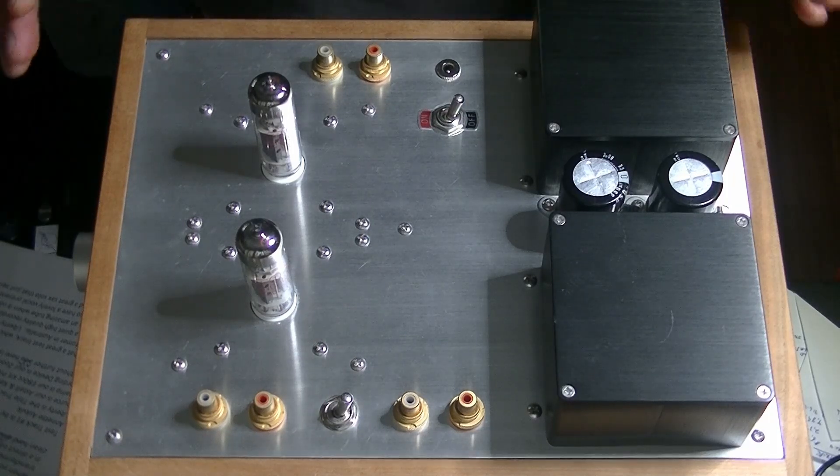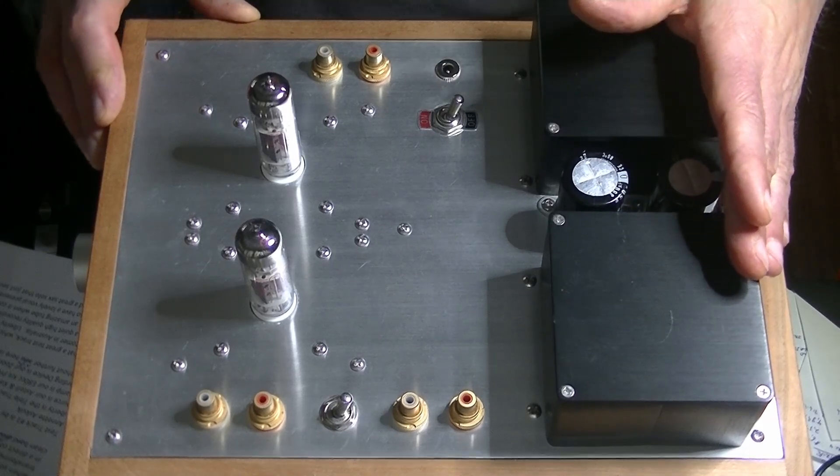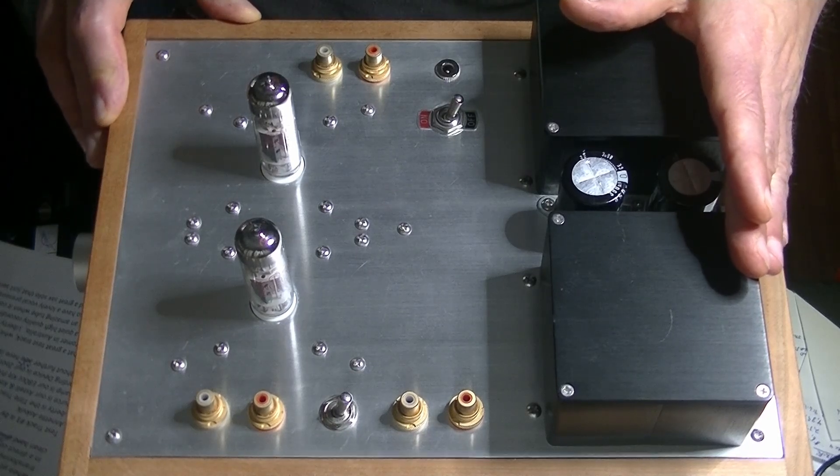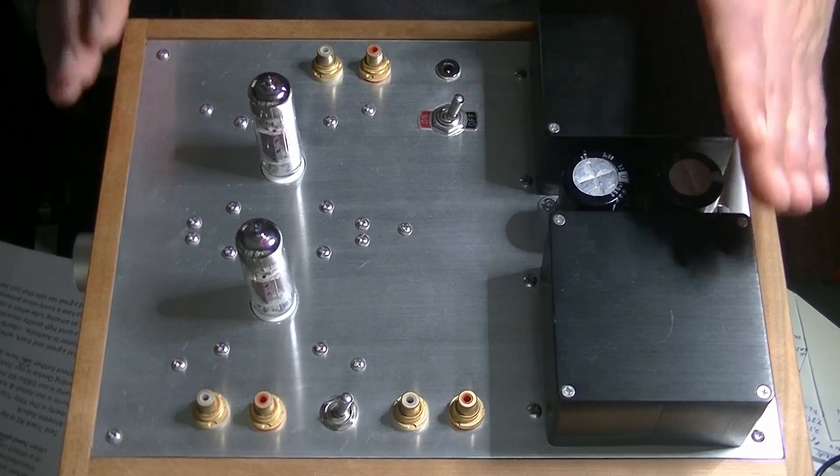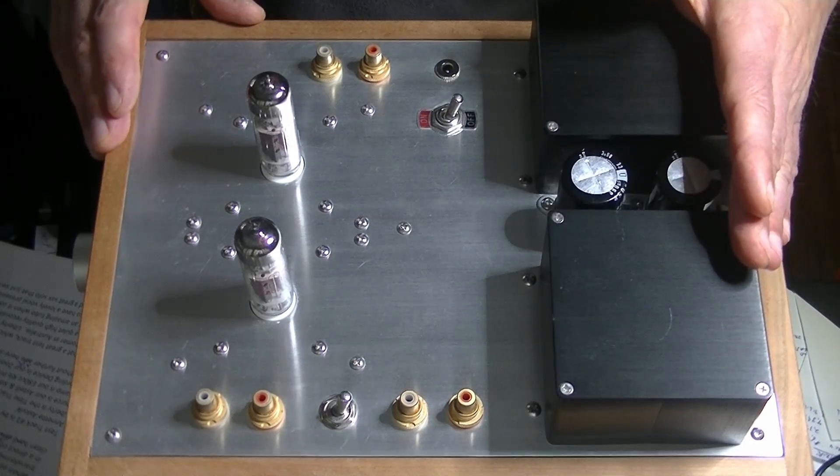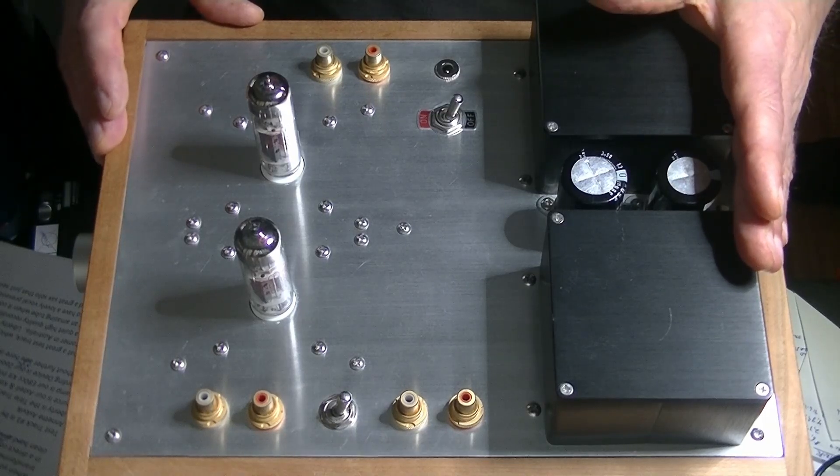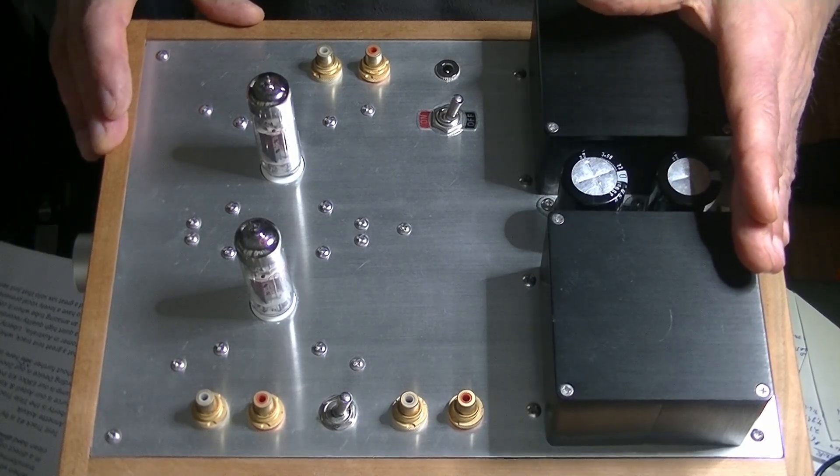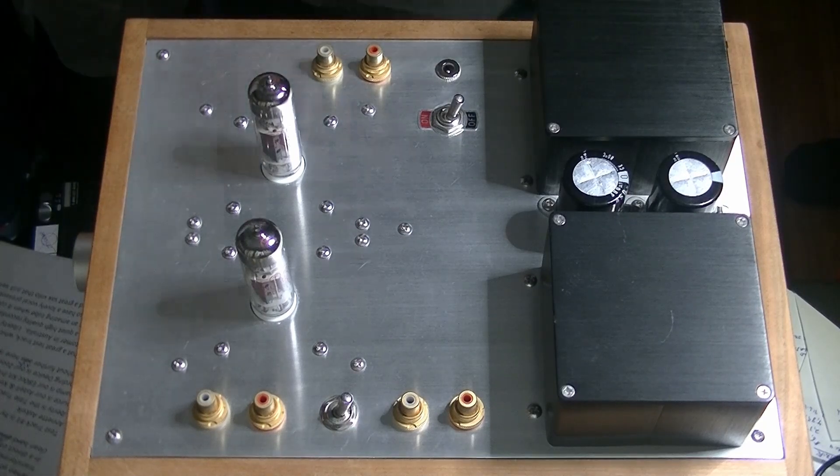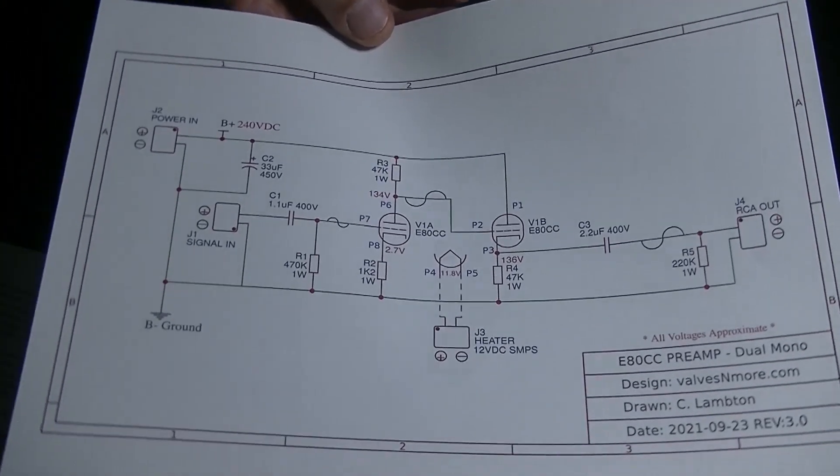So when you combine a dual mono design, large oversized R-Core power transformer and a low noise medium mu or gain tube like the E80CC in a direct coupled design, you get a unique sounding preamp with very detailed, clean, fast sound that's unique and addictive. Let's take a quick look at the schematic just to show you how that direct coupling works, because it's really kind of neat.